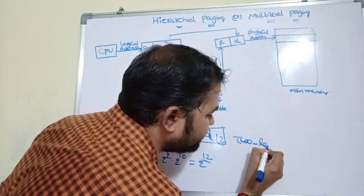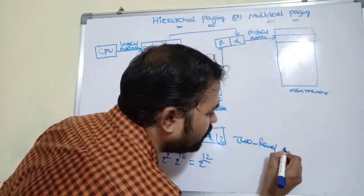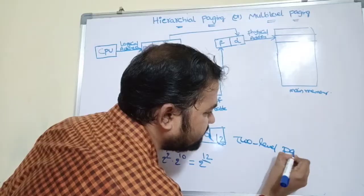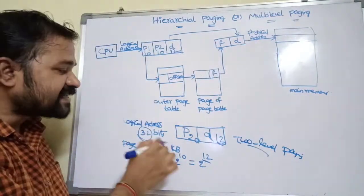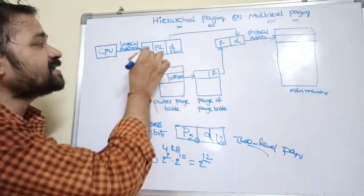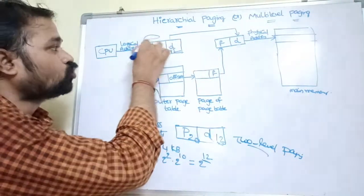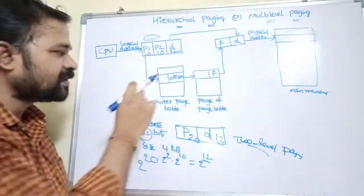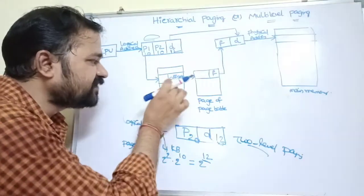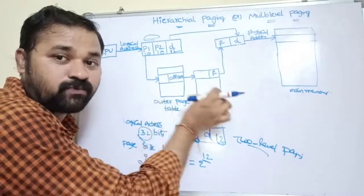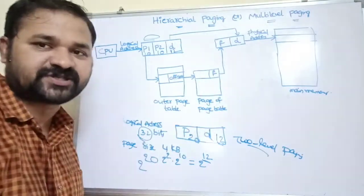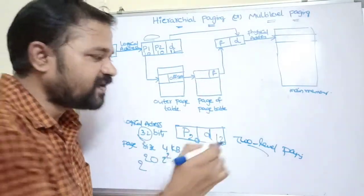This is called two-level paging because we split the page number into two parts and we maintain two page tables.